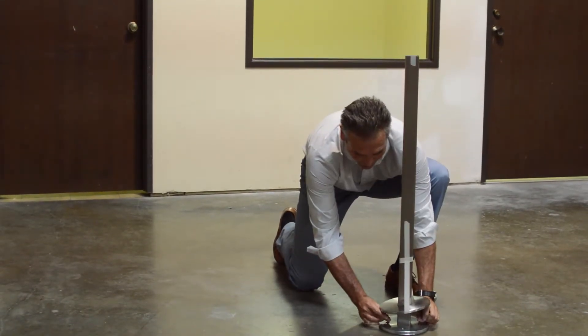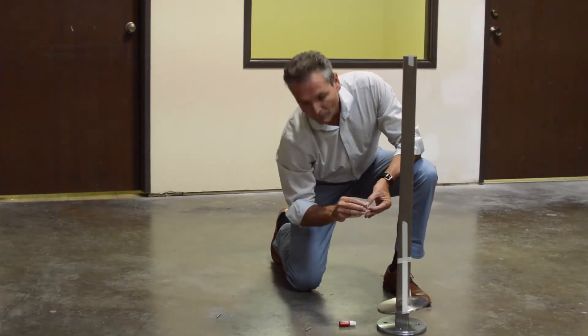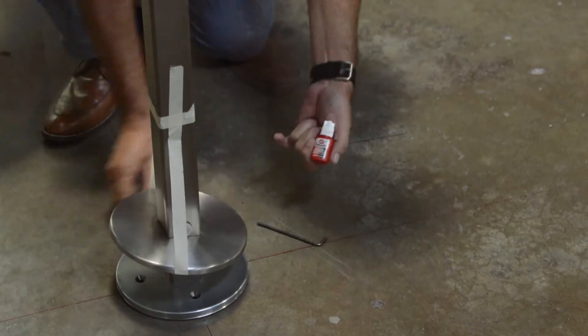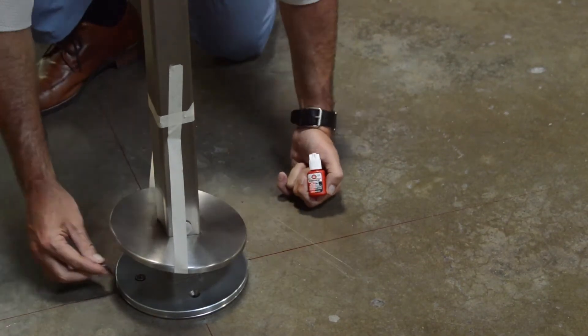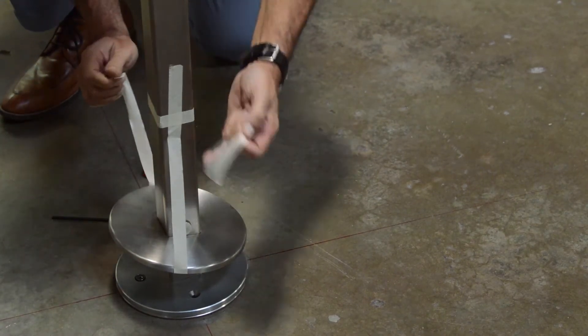We're going to unscrew the alignment threads. Now's the time to put one drop of thread lock in the hole. Take your screw, put it in the hole, tighten with the allen wrench. Do that four times and you're ready to remove the tape.